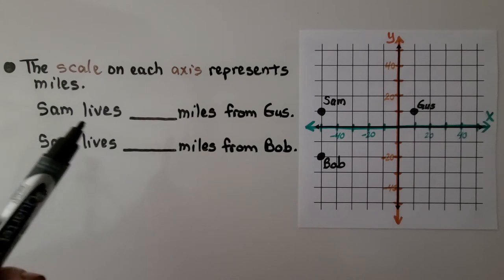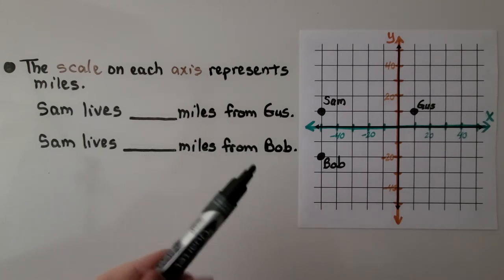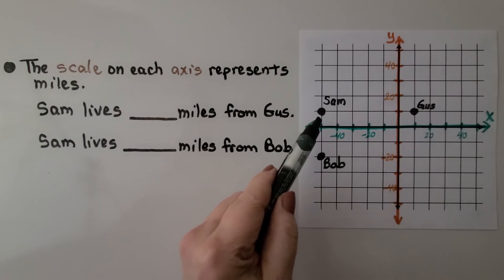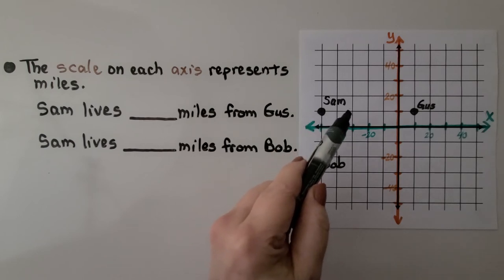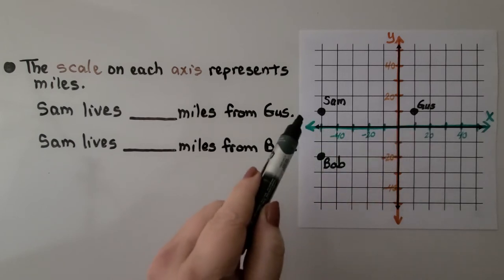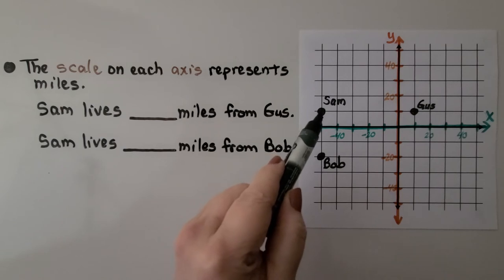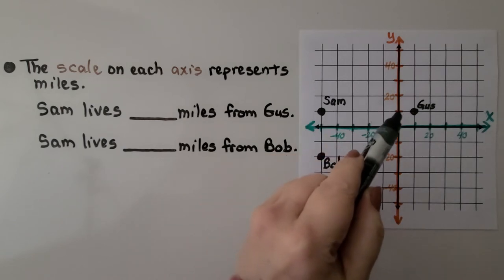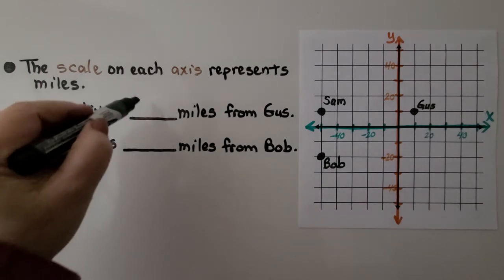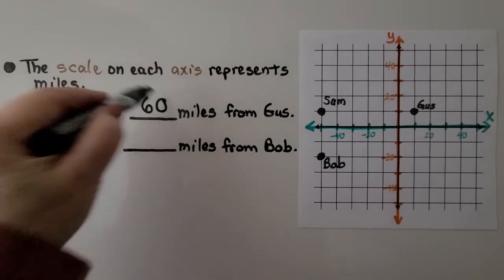It's saying Sam lives blank miles from Gus. Well, here's Sam. And we know that each unit is 10. So, that would be 10 miles. We can go from Sam and count 10, 20, 30, 40, 50, 60. Sam lives 60 miles from Gus.